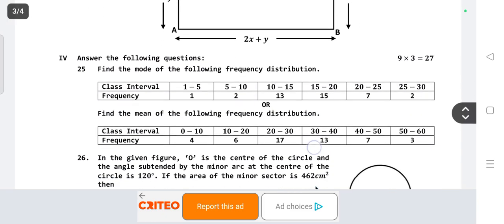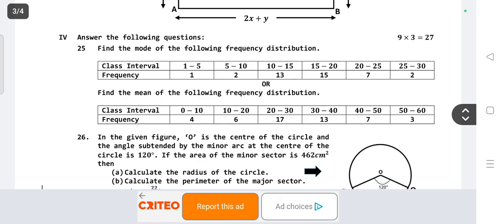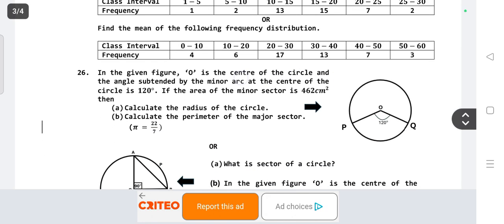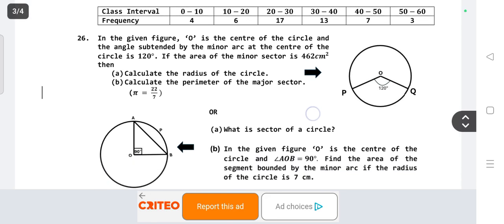Next, three mark questions, nine questions, each carries three marks. Find the mode of the following frequency distribution table. OR: Find the mean of the following distribution table. In the given figure, O is the center of a circle and the angle subtended by the minor arc at the center is 120 degrees. If the area of the minor sector is 462 square centimeters, then calculate the radius of the circle and calculate the perimeter of the major sector.